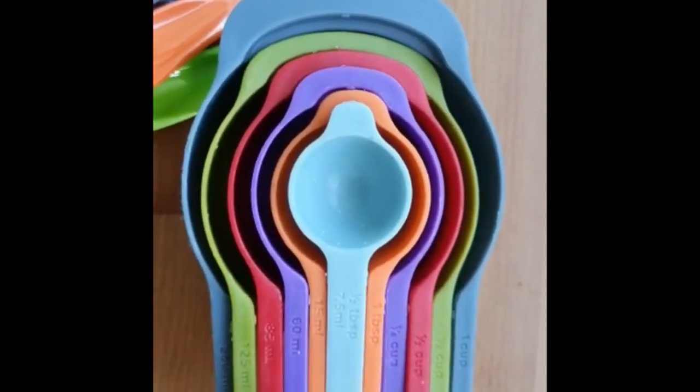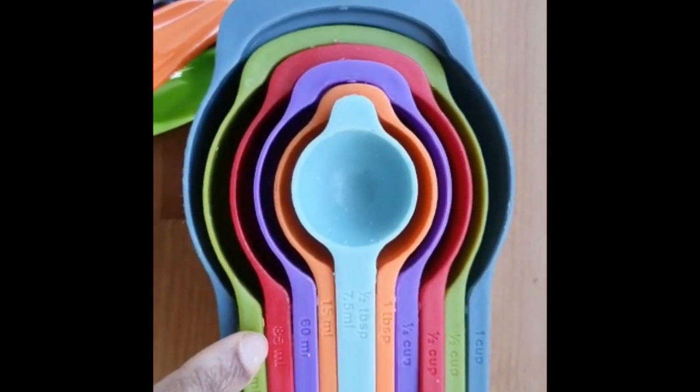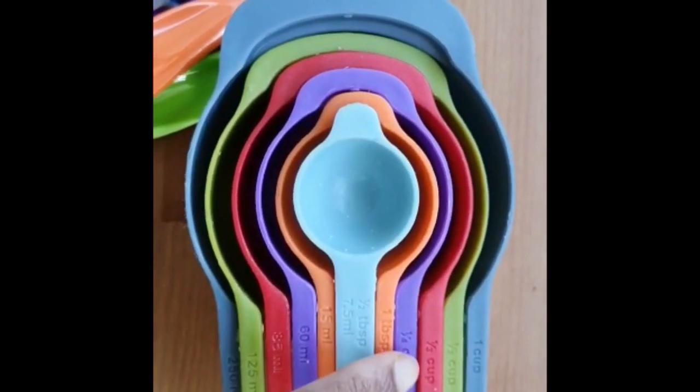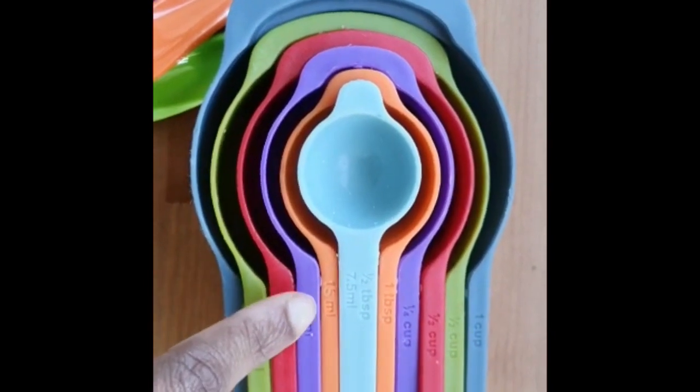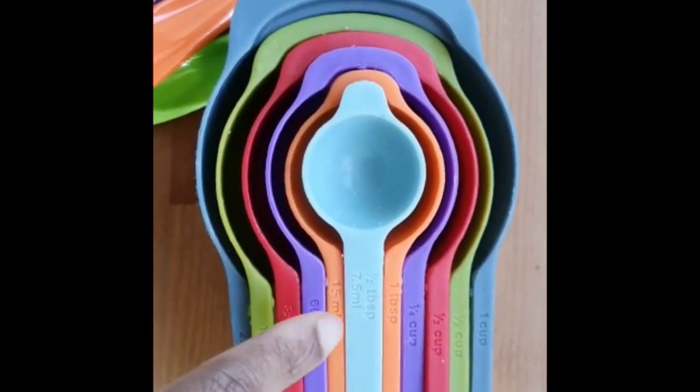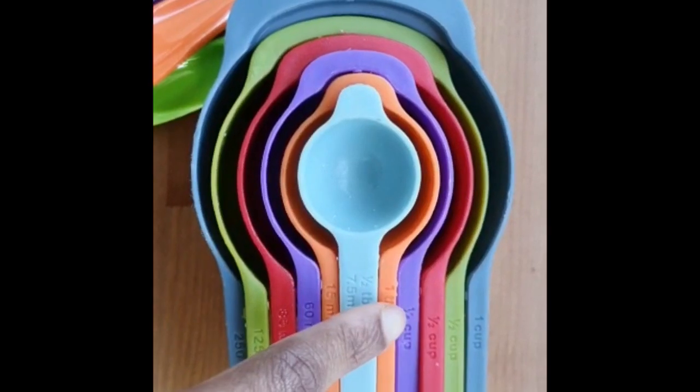Like that, 85 ml is one by third cup, 60 ml is one by fourth cup, and 15 ml is one tablespoon.